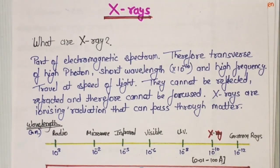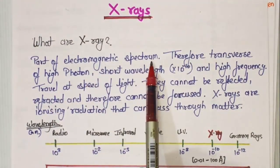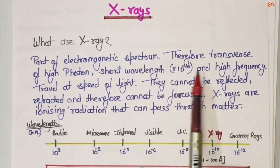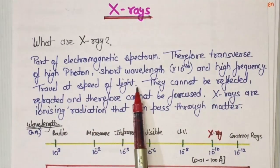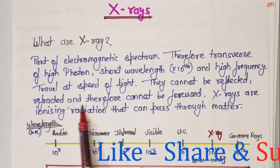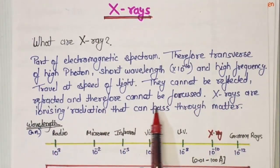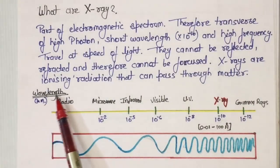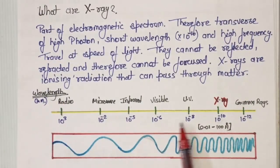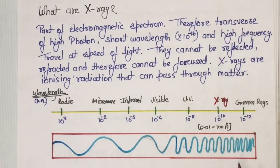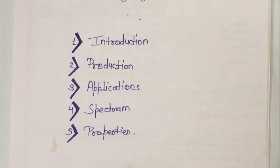X-rays are electromagnetic waves, part of the electromagnetic spectrum — transverse waves of high photon energy, short wavelength, and high frequency. They travel at the speed of light and cannot be reflected, refracted, or focused. X-rays are ionizing radiation that can pass through matter. The wavelength of X-rays lies in the range of 10⁻¹⁰ m, or 0.01 to 100 angstrom.